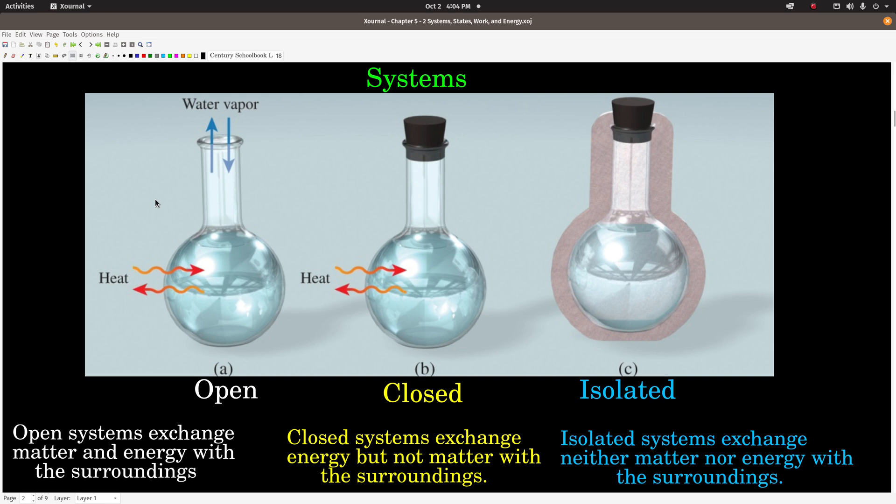First of all, what is a system? It's basically whatever we want it to be. What we always do is we define the system to make our lives easier. Sometimes it's the chemical reaction itself, sometimes it's a container. But as the scientist, we get to choose what the system is, and our choice is going to depend upon what we're trying to find out by the experiment.